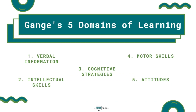Gagne's five domains of learning is a great foundation for completing these two steps. It's believed that learned human capabilities may be classified into several distinct categories. For instance, Bloom proposes what is probably one of the best-known taxonomies, distinguishing between knowledge, comprehension, application, analysis, synthesis, and evaluation. Others differentiate between cognitive, affective, and psychomotor learning outcomes. While comparing these taxonomies, it's important to note that most posit additional subcategories within each major domain.